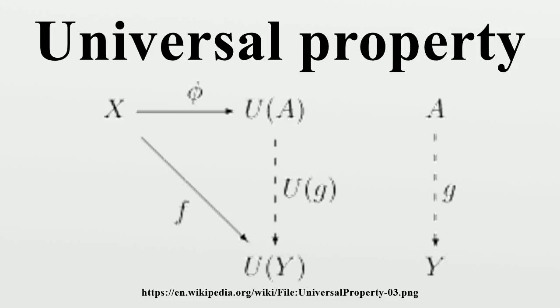In various branches of mathematics, a useful construction is often viewed as the most efficient solution to a certain problem. The definition of a universal property uses the language of category theory to make this notion precise and to study it abstractly.